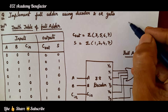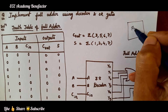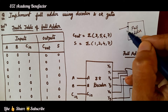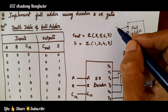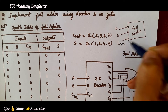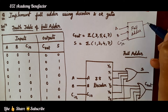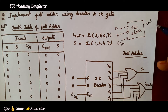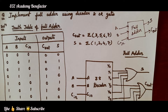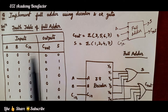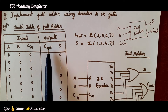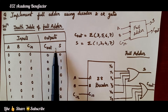What is a full adder? A full adder has three inputs: A, B, and input carry C-in. There are three inputs for the full adder and two outputs: sum S and carry out C-out.